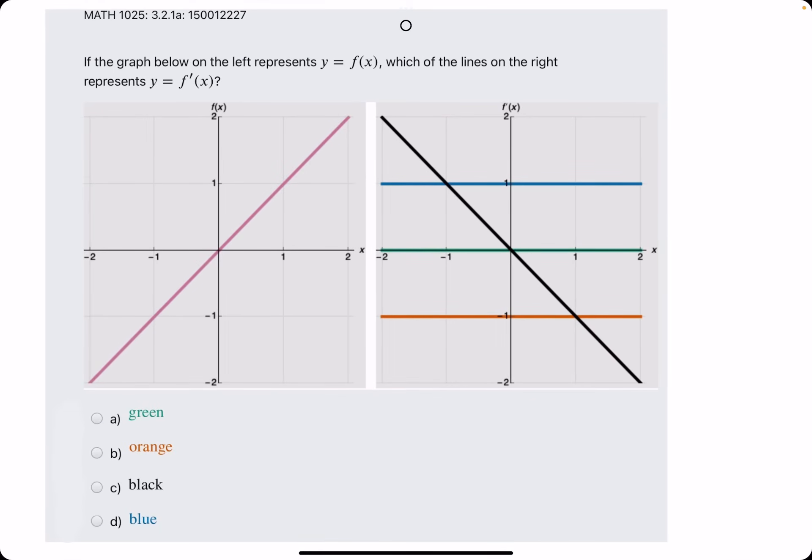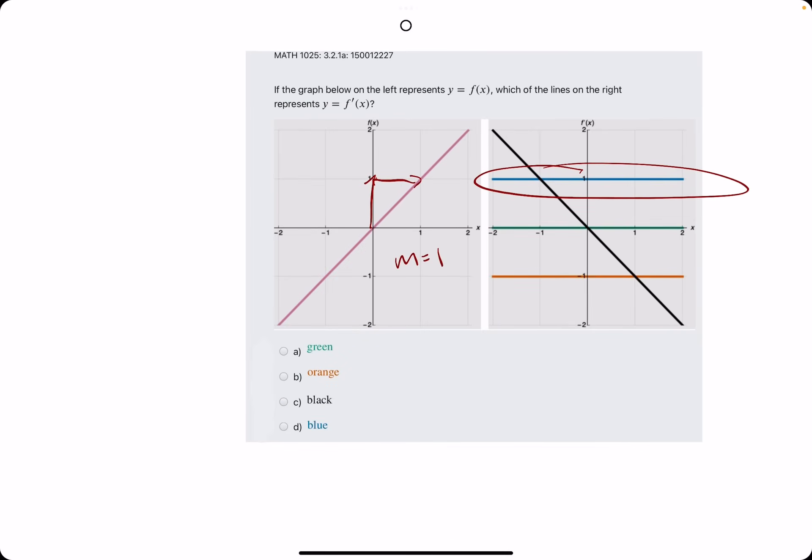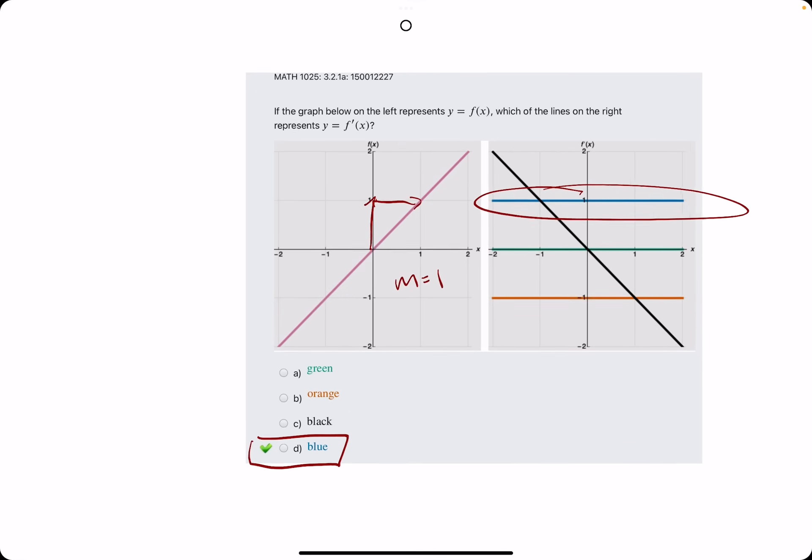Let's do one more. Here, we have a rise of one, a run of one, one over one gives us a slope of one. Again, we're looking for the y value of one, and that is blue. And that should be it. All right.